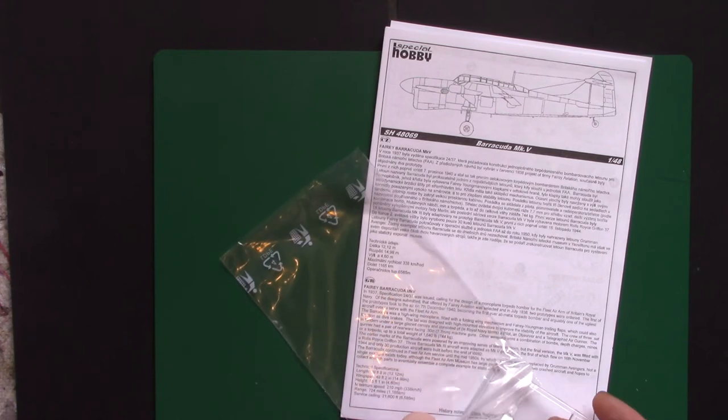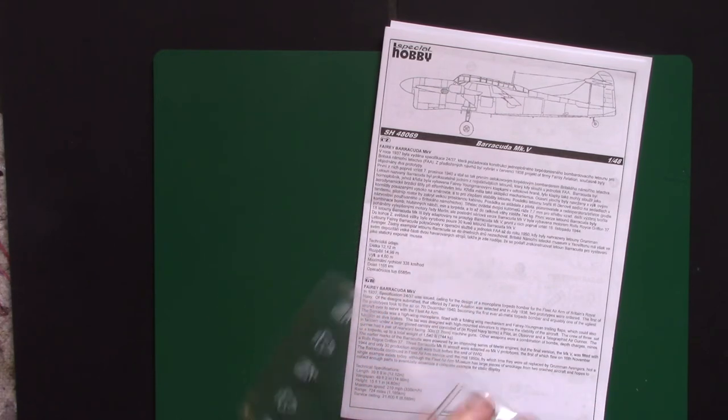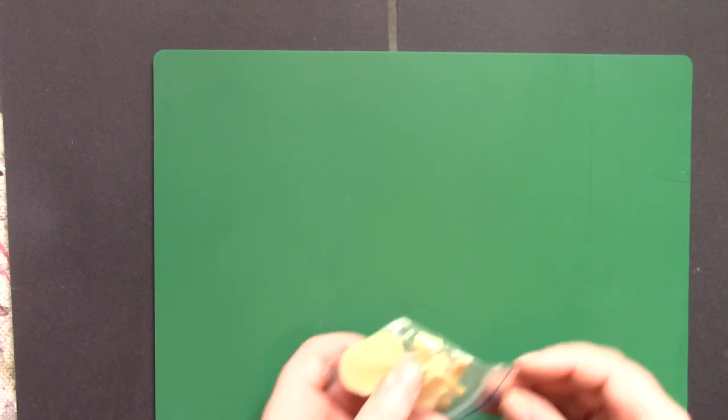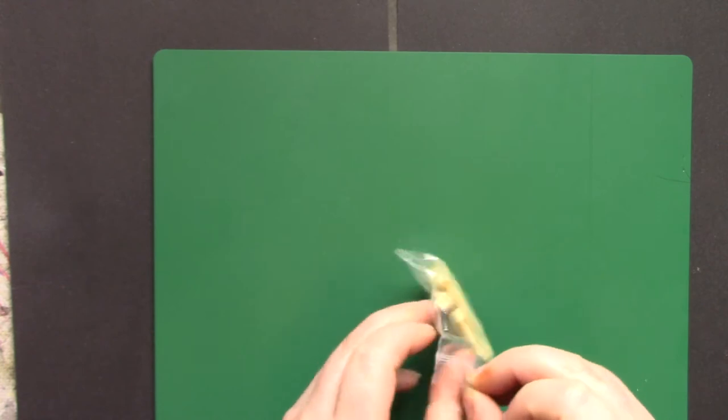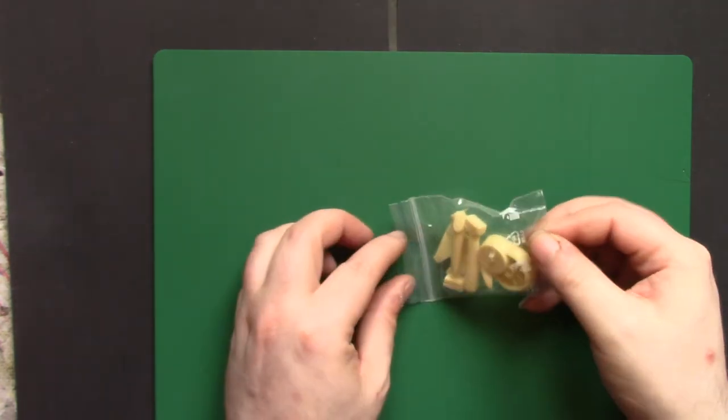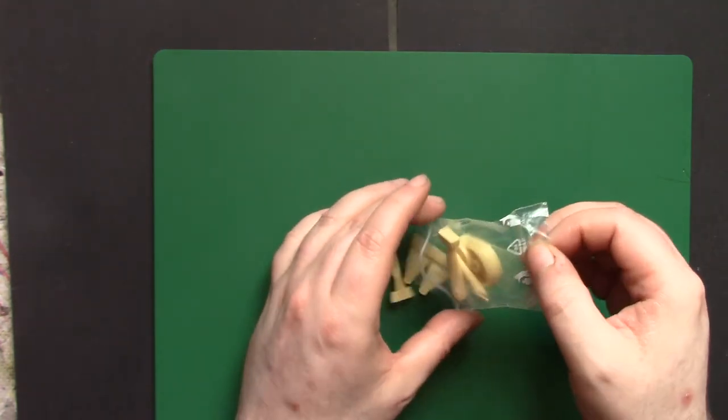So what we've covered so far is what you'd get if you bought the standard kit version, sans all the resin and etch and stuff. So we shall start out by looking at a bag of resin. Let's start with the small one. There's two different types of resin, a yellow and a grey. I'm not sure what the significance is, whether it's just a different dye or different types of resin.